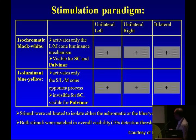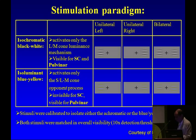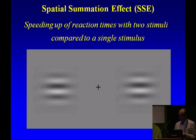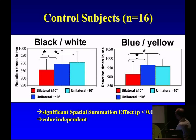We used isochromatic black-and-white stimuli and blue-yellow stimuli, presenting each on one side, the other side, and both simultaneously. We had 16 control subjects, and we saw a spatial summation effect in all of them — bilateral responses were always quicker than unilateral, for both blue-yellow and black-and-white. With hemispherectomy subjects without blindsight, we don't see the effect. For those with blindsight, they respond more quickly to black-and-white stimuli but not to bilateral blue-yellow stimuli.